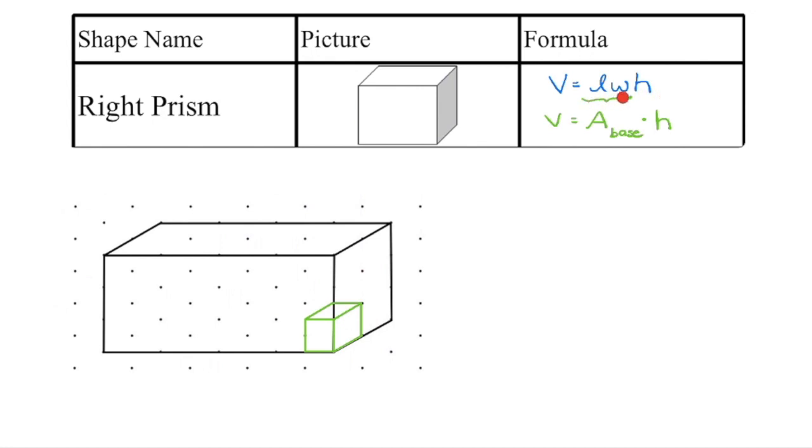We're basically taking the area of the base and then multiplying by how many layers we can stack. So as you can see on isometric dot paper here I have my one cubic unit and we're going to fill the first layer with those units.